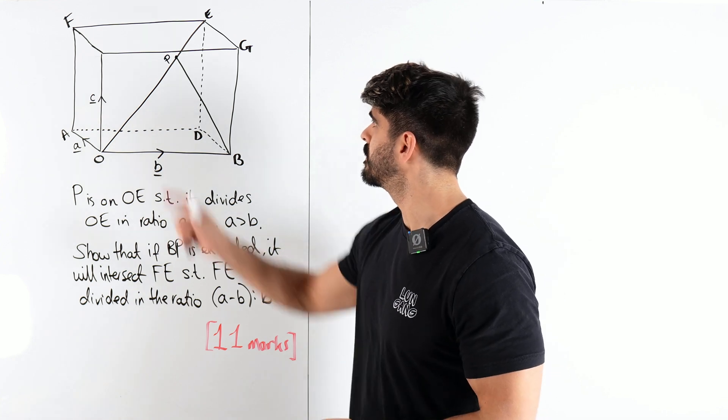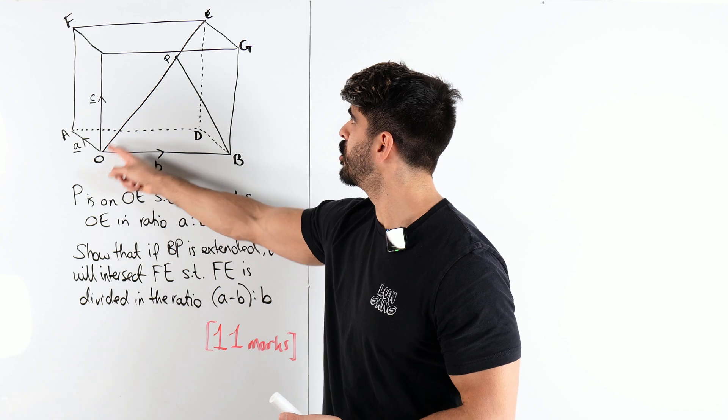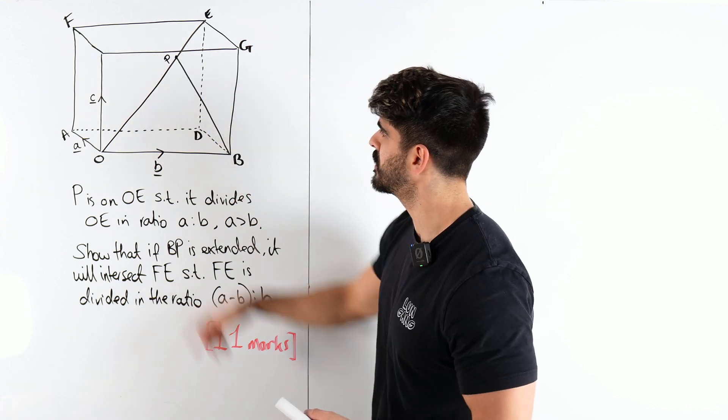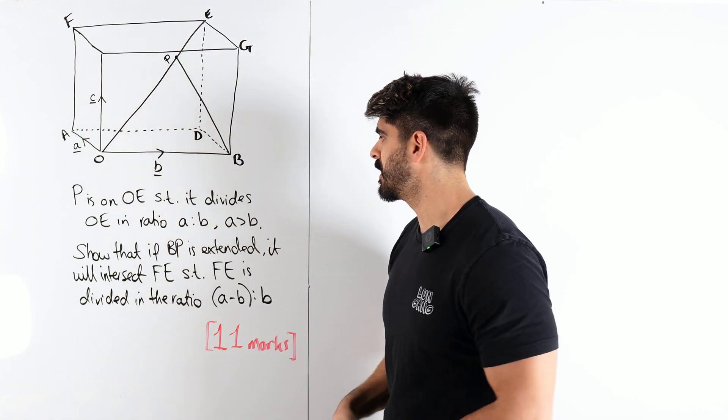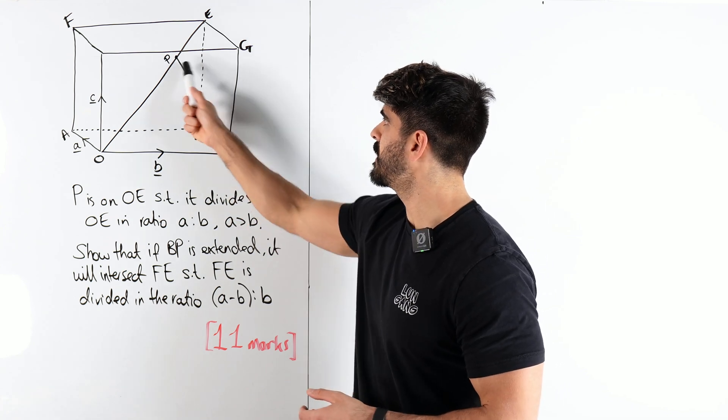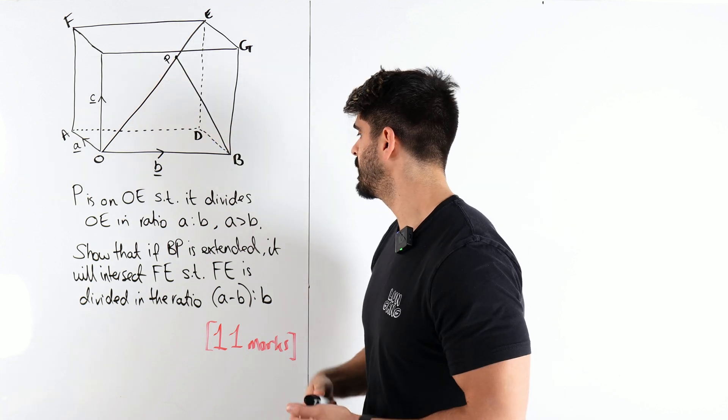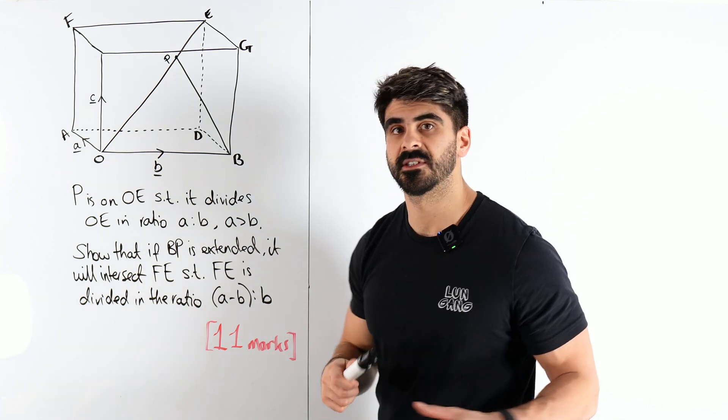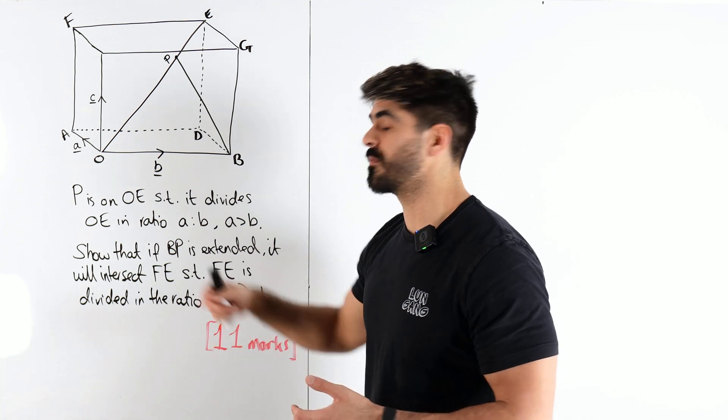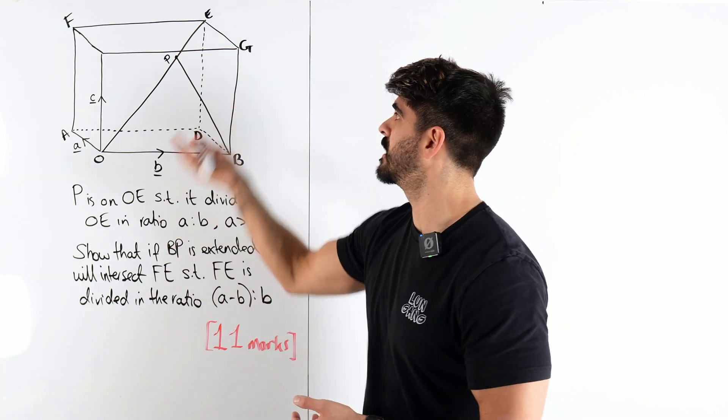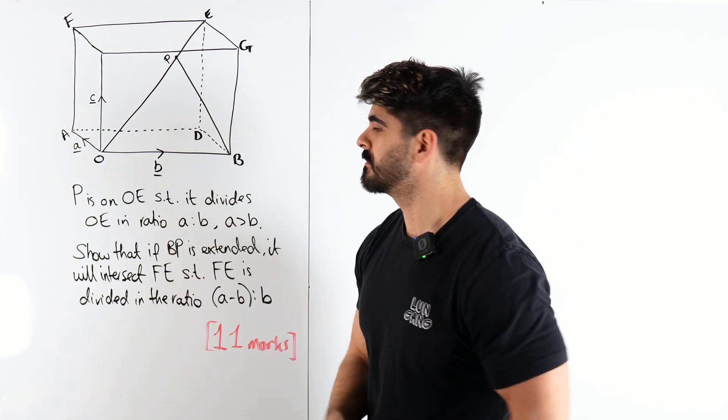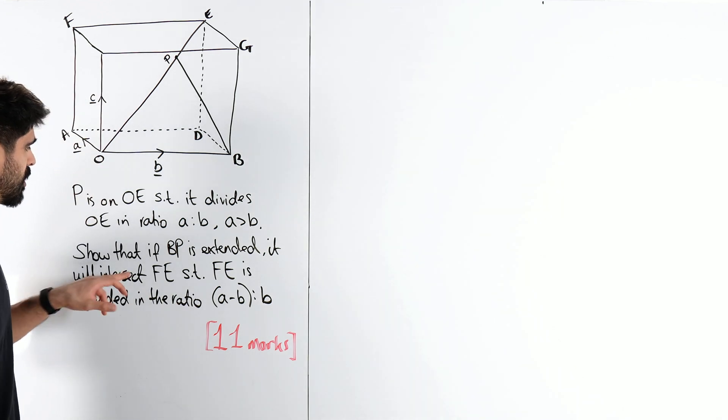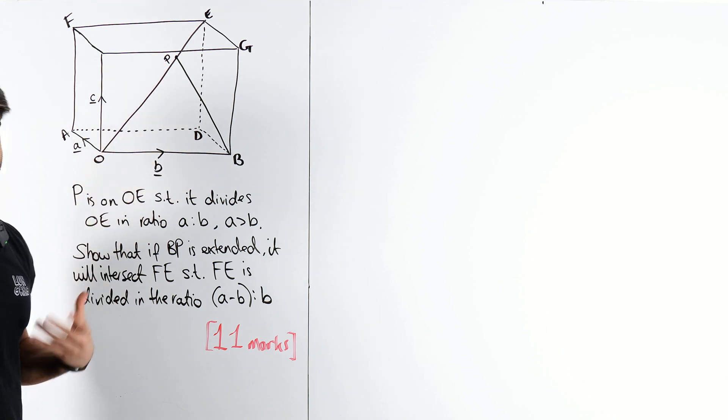We have P is on OE in the ratio A to B, where A is bigger than B, just implying that OP is bigger than PE. Show that if BP is extended, then it will intersect FE in the ratio A minus B to B. Now, this kind of question here, they obviously have a lot of yap in the beginning, saying this is a cuboid. The diagram is good enough for us. Okay, it's basically in the question, they're saying show that if BP is extended, so we just need to work out what BP is.